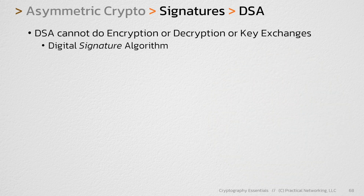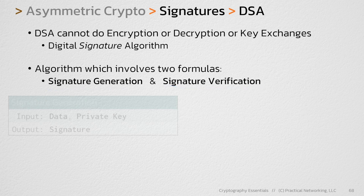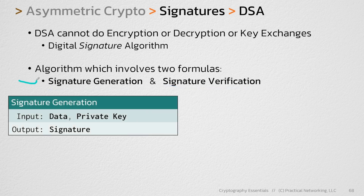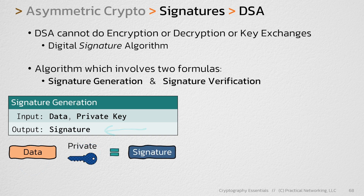DSA is an algorithm that involves two formulas: one formula which generates a signature and another formula which verifies a signature. The formula for signature generation requires as input the data you're trying to sign and the private key, and the result is the signature itself.